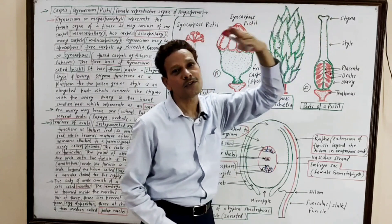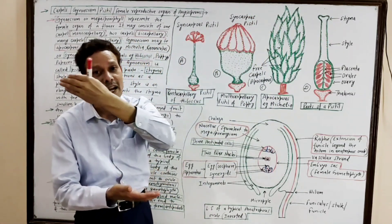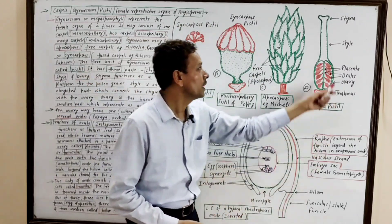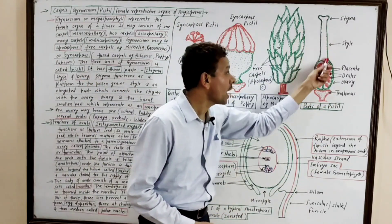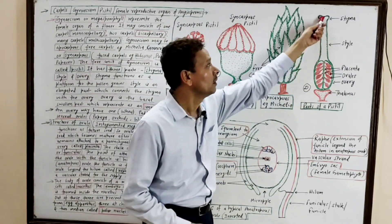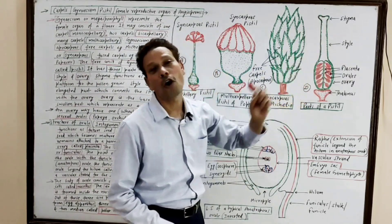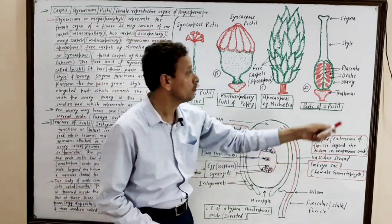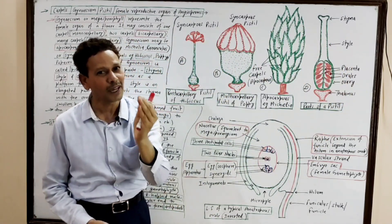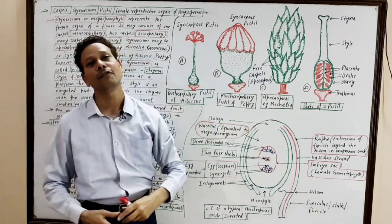This terminal part, the stigma, acts as a landing platform for the pollen grains. The style is an elongated stalk-like structure that connects the stigma with the ovary. This basal swollen part is the ovary, and this ovary acts as an unripened fruit.